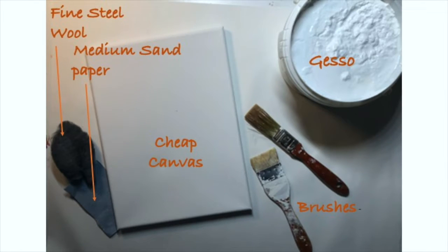The supplies you need will be of course a canvas to work on. I'm using gesso which is made by Liquitex. I have several kinds of brushes here. One of them is just a paintbrush for painting. You can get it at a hardware store, about a one inch brush, and then I have a little bit finer brush too that I've used. And then I'm using medium sandpaper and also I'll be needing fine steel wool.